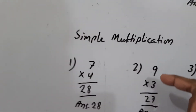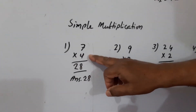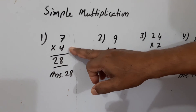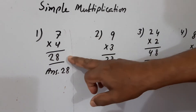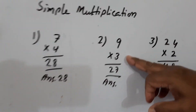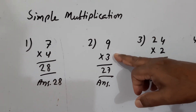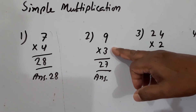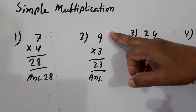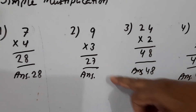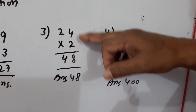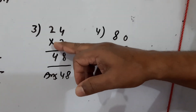Simple multiplication, 4 times table. 4 fives are 20. 4 sixes are 24. 4 sevens are 28. Write 28. Now this you have to multiply. First 2 times 4 is 8. Answer is 48.